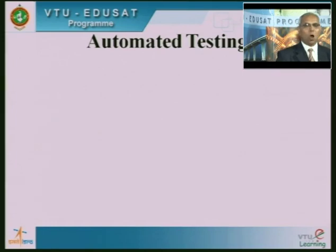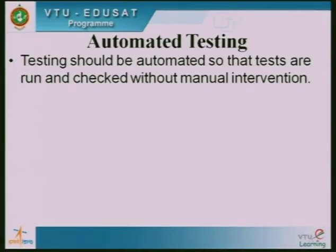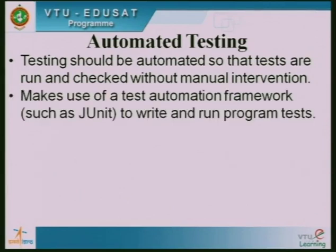Next is automated testing. Automation is at the heart of software development — software is meant for automating things. Testing is one of the software processes, and we try to automate our software testing process also. Testing should be automated so that tests are run and checked without manual intervention. However, we cannot automate testing totally — we need to have a manual component. Some components of our testing process can be automated.